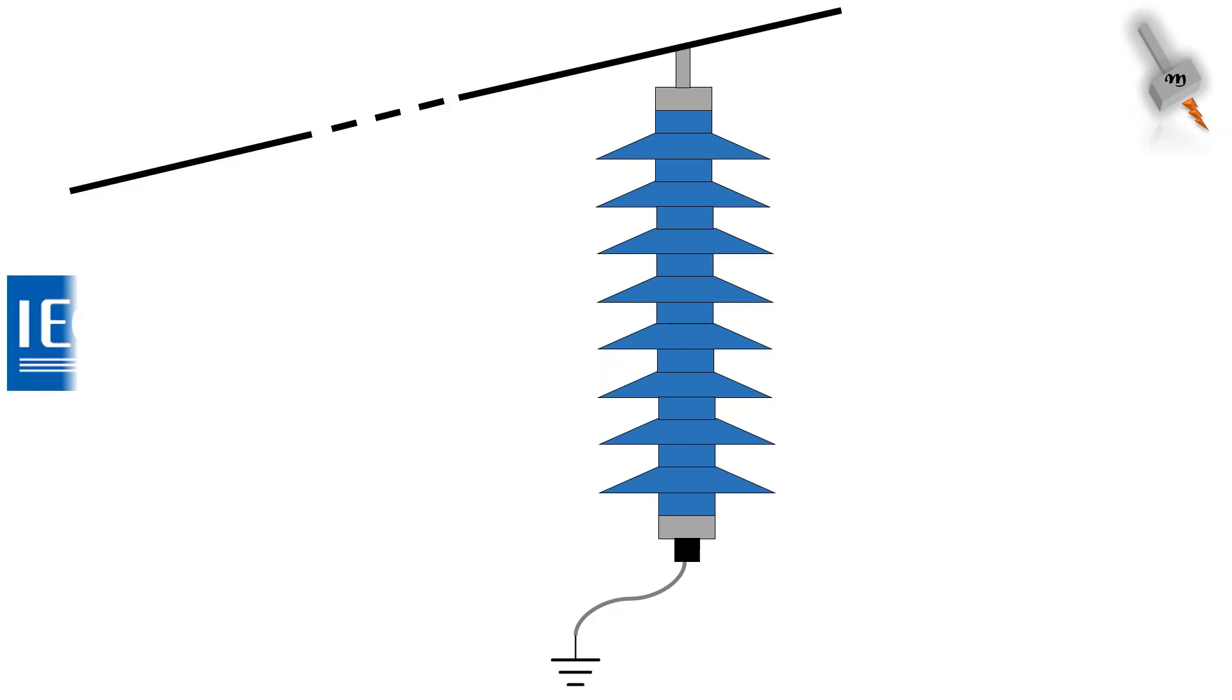Residual voltage is defined in IEC and alternatively known in IEEE standard as discharge voltage. It is the voltage across the arrester terminals when discharge current passes through it.